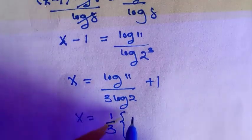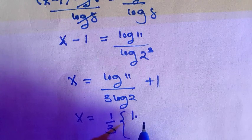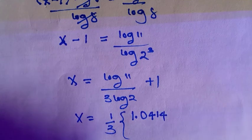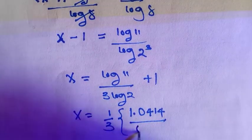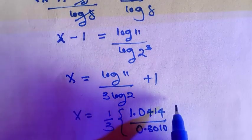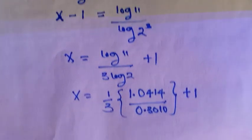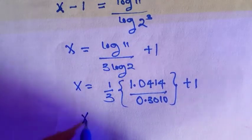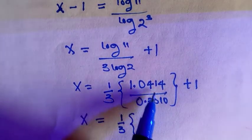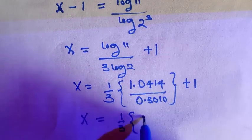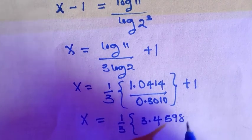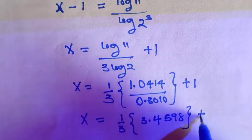Log 11 is given as 1.0414, everything divided by log 2, that is 0.3010, plus 1. Let's divide 1.0414 by 0.3010. That is going to be 3.4598, so I stop at 4 decimal places, plus 1.